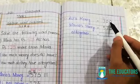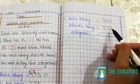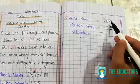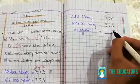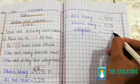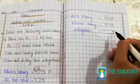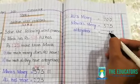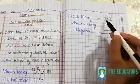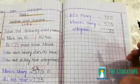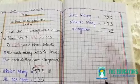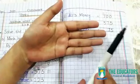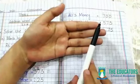Dekho: 0 aur 5 — matlab aapke paas kuch bhi nahi tha aur agar aapko 5 rupees mil gaye hain to aapke paas 5 ka 5 waisa hi rahega. Aur 7 bhi as it is. Ab 7 aur 5 ko add karein — 7 ke aage 5 count karna hai: 7, 8, 9, 10, 11, 12.